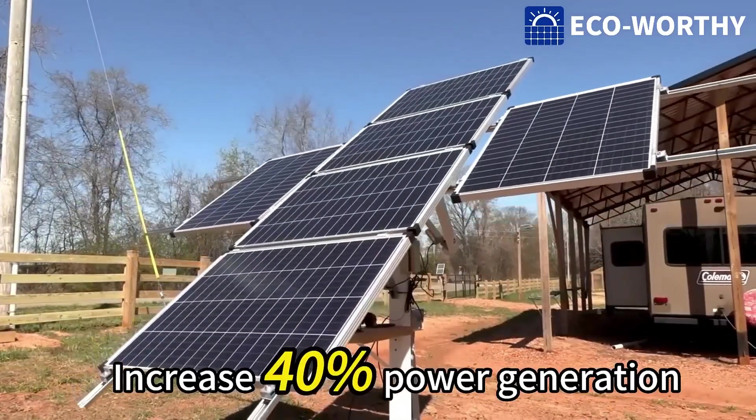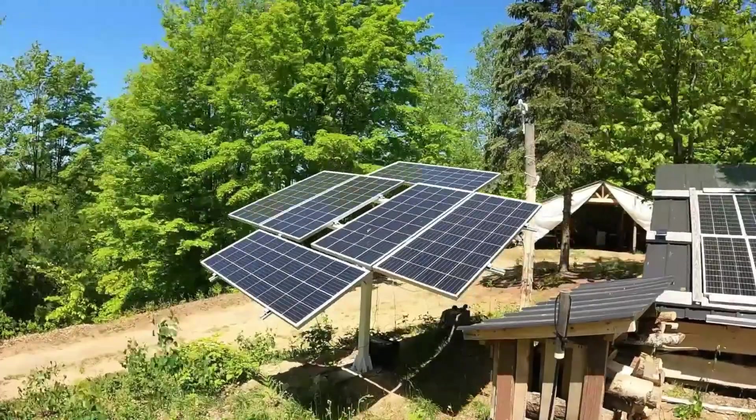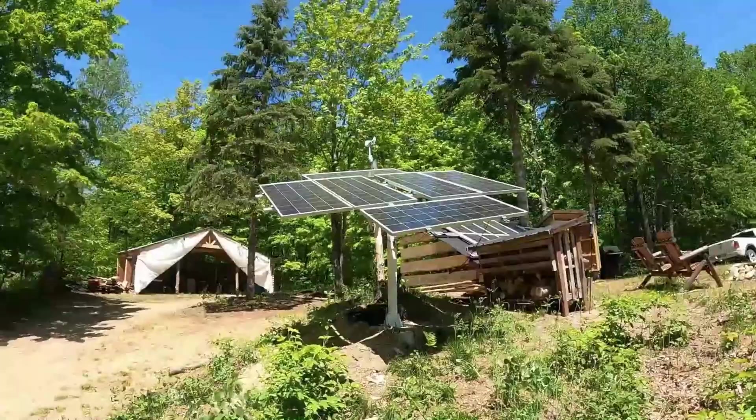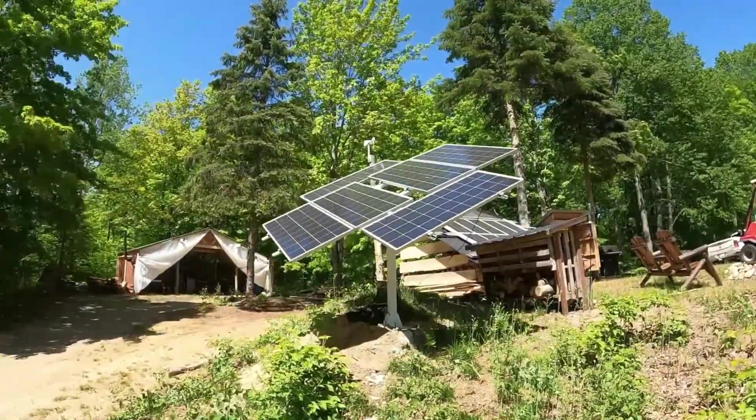Ever wondered how this type of solar tracker from EcoWorthy works? A single-axis solar tracker can only move left and right to follow the sun. But a dual-axis solar tracker can also move up and down for more precise tracking.